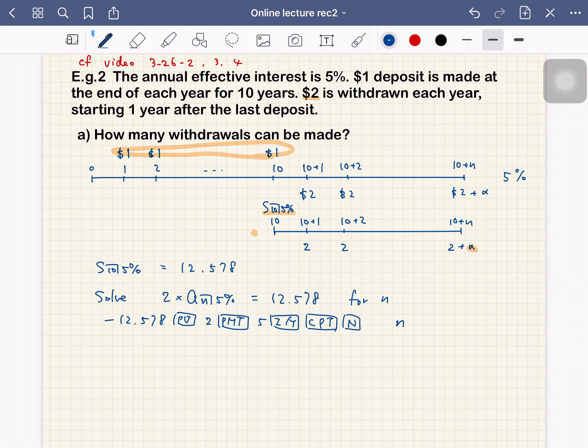Then you get n is equal to 7.738 years. So that means seven payments will be made, seven withdrawals.